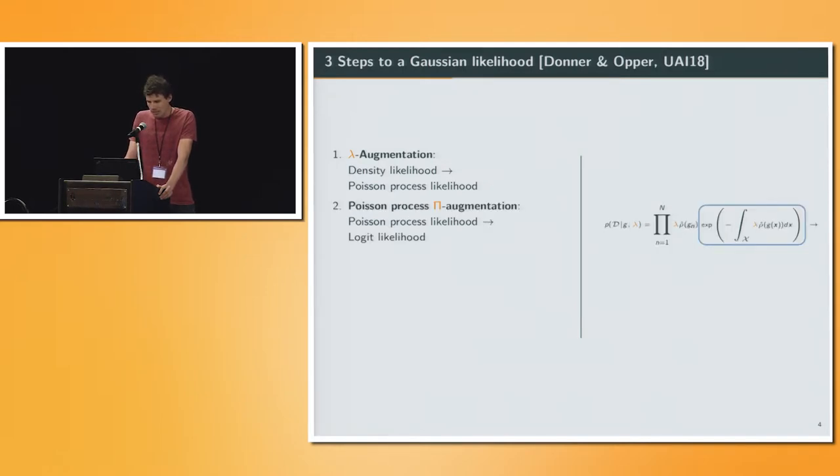The second one is a Poisson process augmentation, where pi is a Poisson process over our observation space. This allows us to transform the Poisson likelihood into a logit likelihood, where we have basically now a classification problem, where the likelihood only depends on sigmoids of the function g, and one class of the classification is a random set.